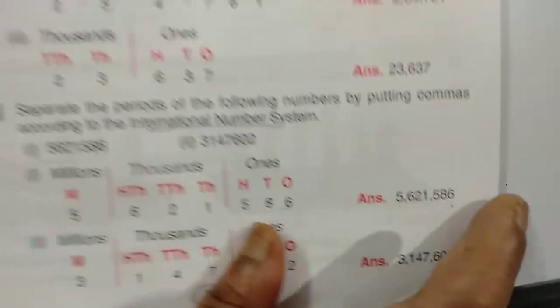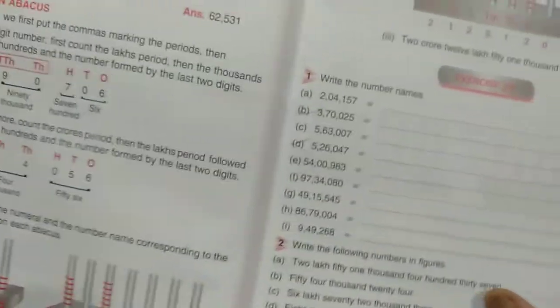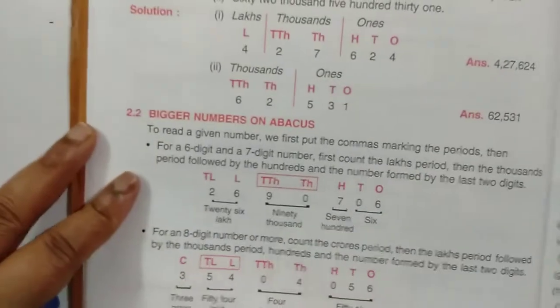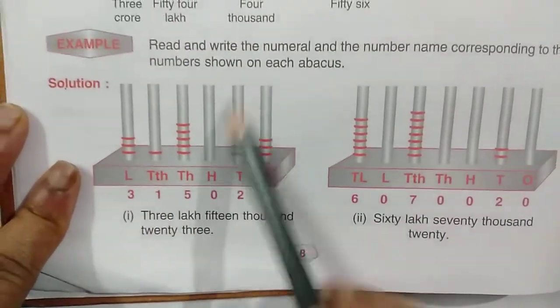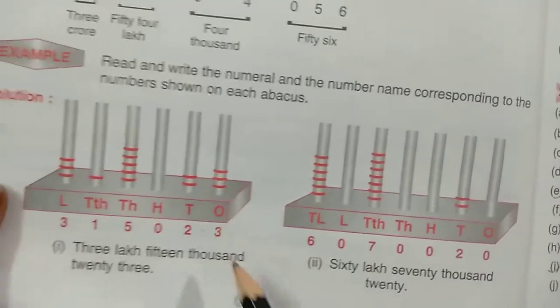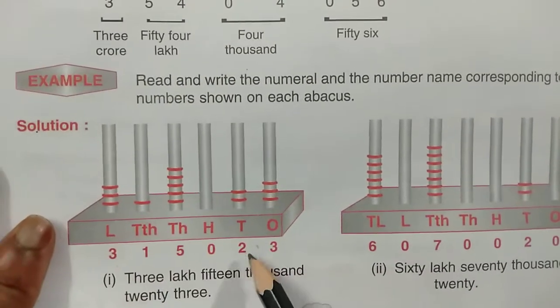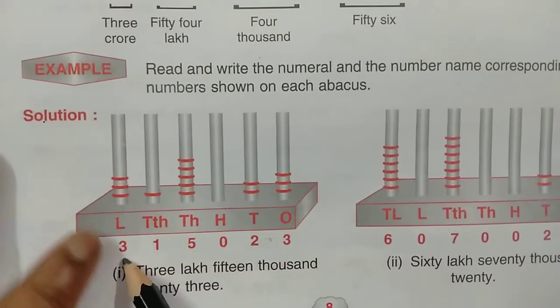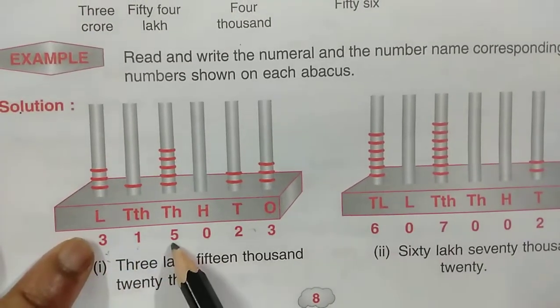Now let's do the bigger number on an abacus. In the abacus, different lines represent different place values. For example, in the Indian system: ones, tens, hundreds, thousands, ten thousands, lakh. Reading the abacus, we get three lakh, fifteen thousand, twenty-three.